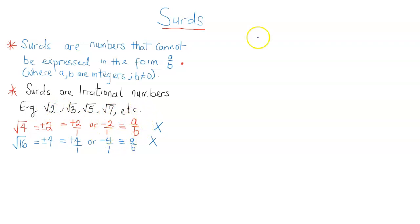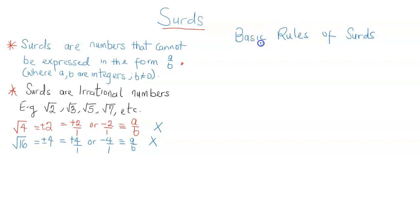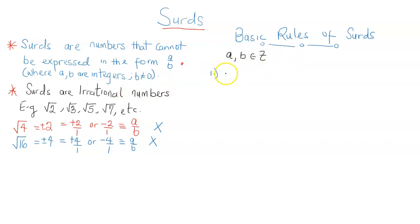Now we are going to focus on the basic rules of surds. There are a number of rules guiding the operations on surds. Taking a and b as integers, the first rule states that the square root of a over b is equal to the square root of a divided by the square root of b.